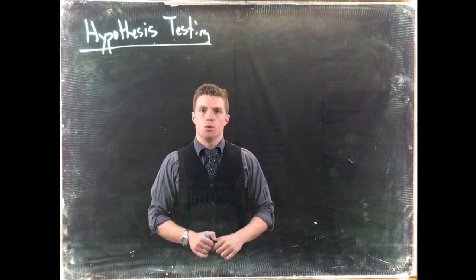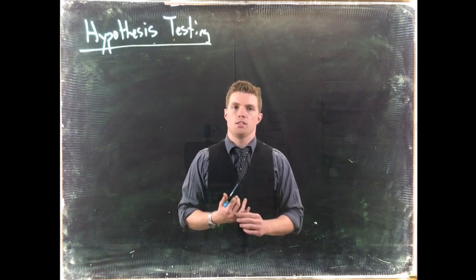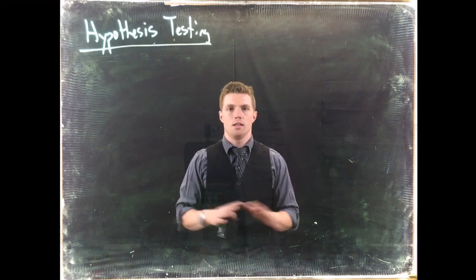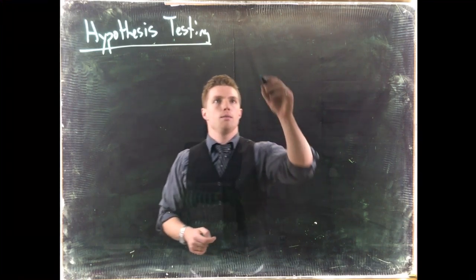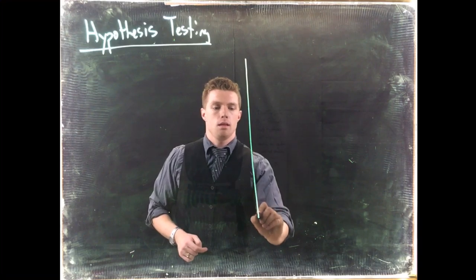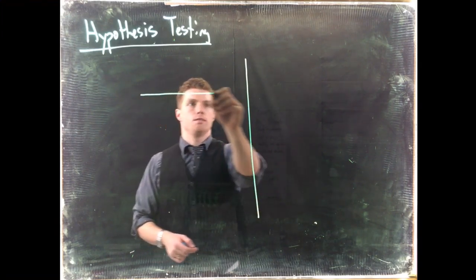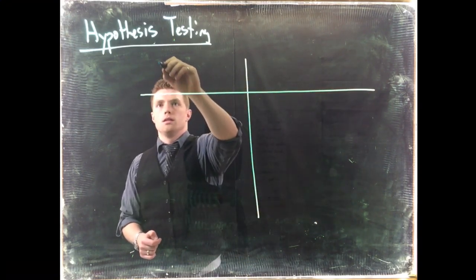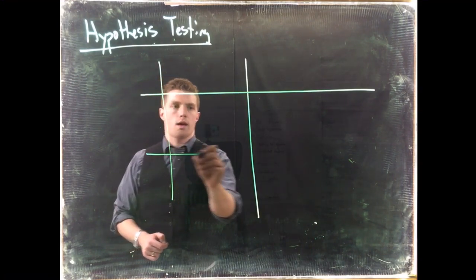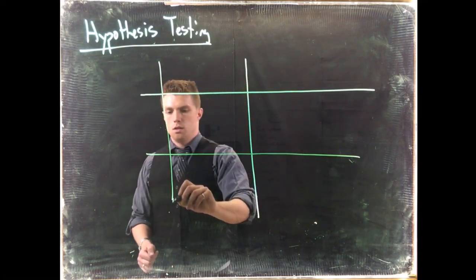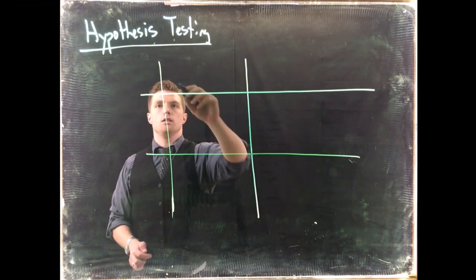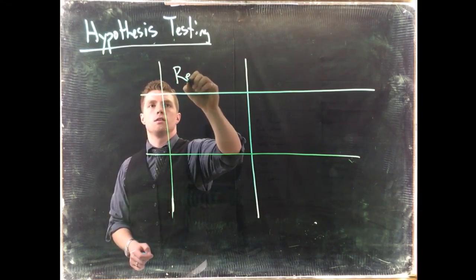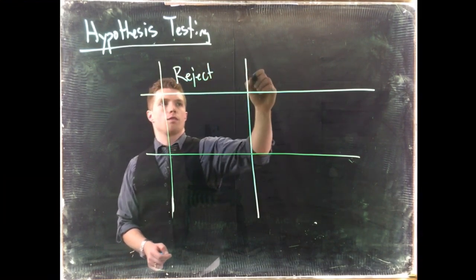Now that we've gone through all of our steps of hypothesis testing, I need to do a little bit of expansion on when we reject and when we fail to reject. Let me go ahead and put up a little bit of a diagram. Whenever we do a hypothesis test, we can either reject or fail to reject.